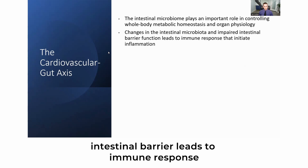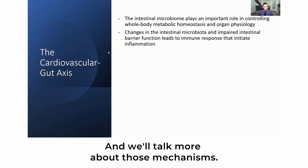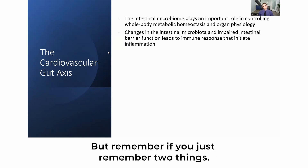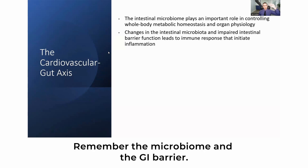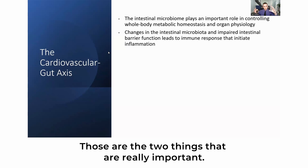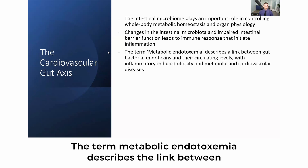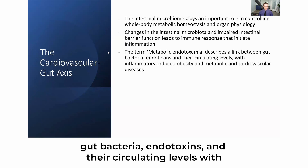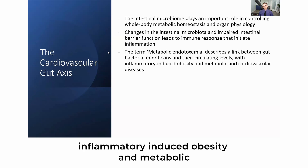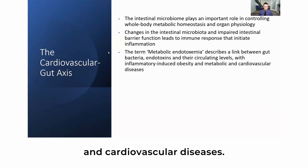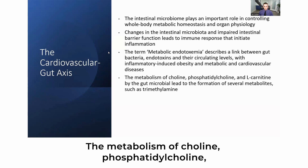Changes in one system can impact another system. Changes in the intestinal microbiota and impairment of the intestinal barrier lead to immune responses that initiate inflammation. If you remember two things, remember the microbiome and the GI barrier — those are really the two most important things. The term metabolic endotoxemia describes the link between gut bacteria endotoxins and their circulating levels with inflammatory-induced obesity, metabolic, and cardiovascular diseases.